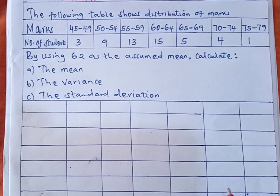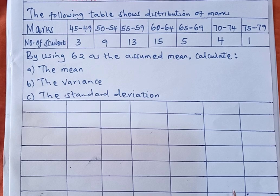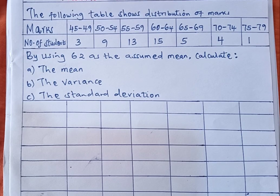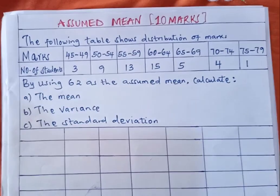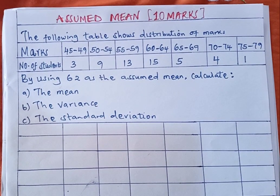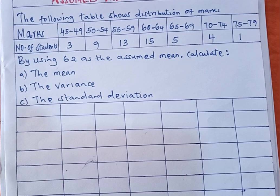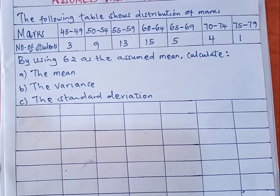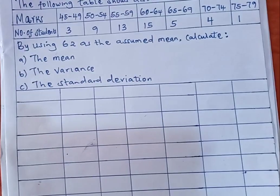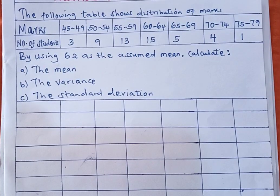We have a question that gives us a distribution of marks scored by 50 students in a test. Using the assumed mean of 62, we are asked to calculate the mean, the variance, and the standard deviation. We are going to construct a table to help us get the required information.